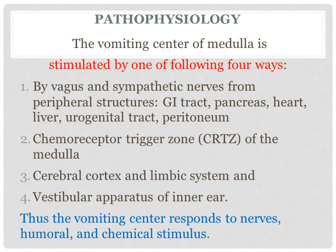Now coming to the more technical part — pathophysiology. The vomiting center of the medulla is stimulated by one or more of the following four ways. The first way is by vagus and sympathetic nerves from peripheral organs such as the gastrointestinal tract, pancreas, heart, liver, urogenital tract, and peritoneum. Thus, diseases of these organs lead to stimulation of the vomiting center and there is vomiting.